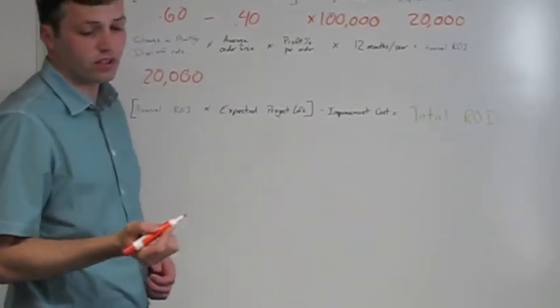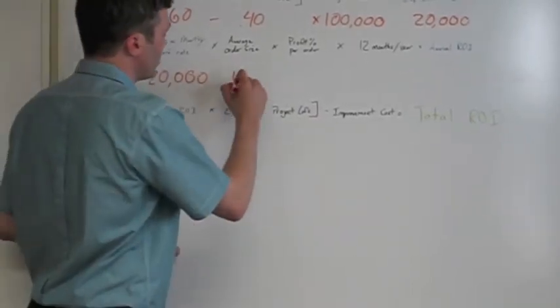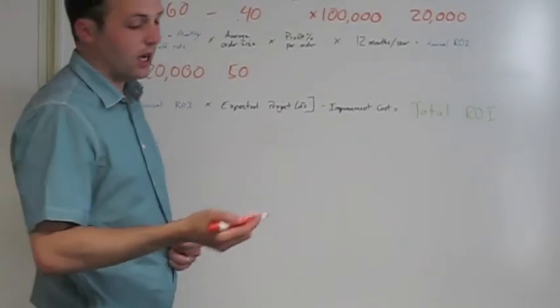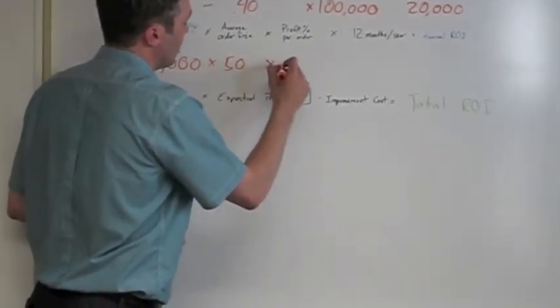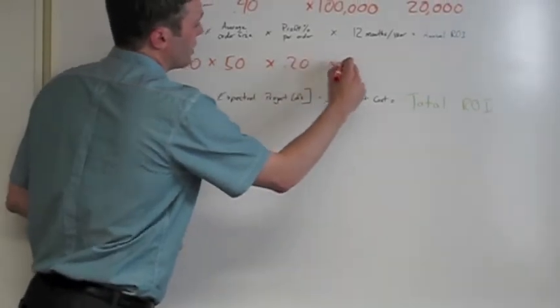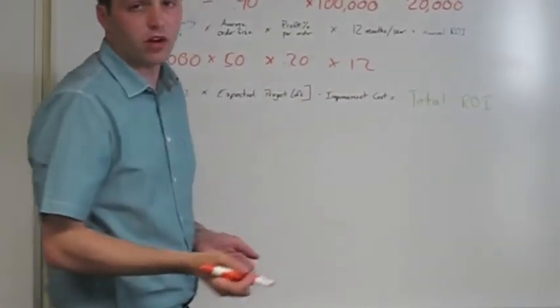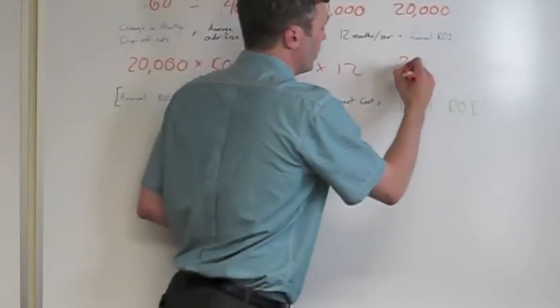And your average order size is, let's just use round numbers, we'll use 50. And profit percent, we're at 20% profit. And we'll do that times 12. And I guess that's our annual ROI now of 2.4 million.